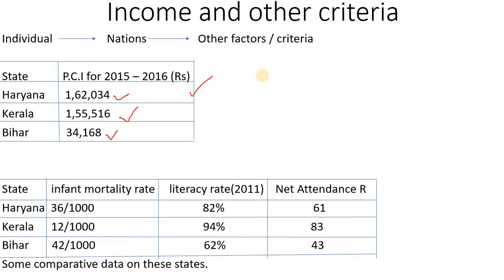Yes, you can say it — Bihar's income is very bad, it is a very low income. So we look at other criteria beyond just per capita income.